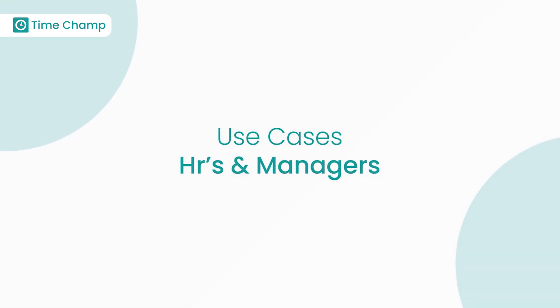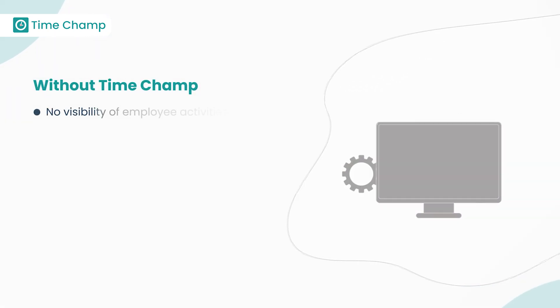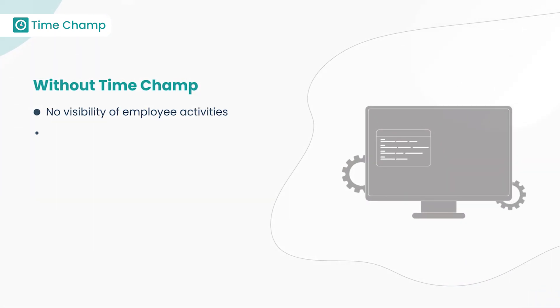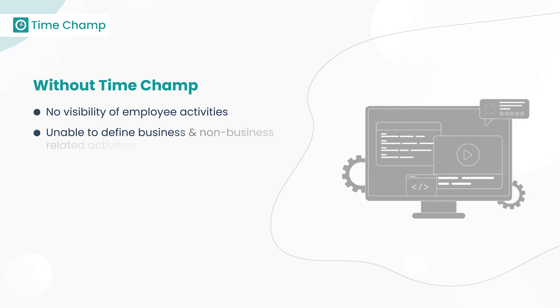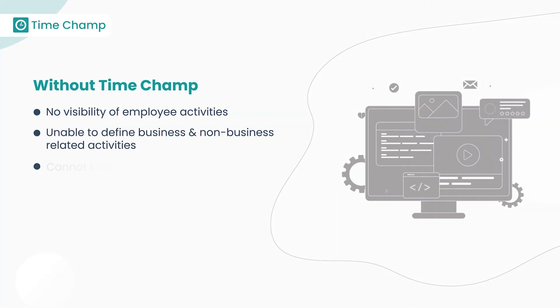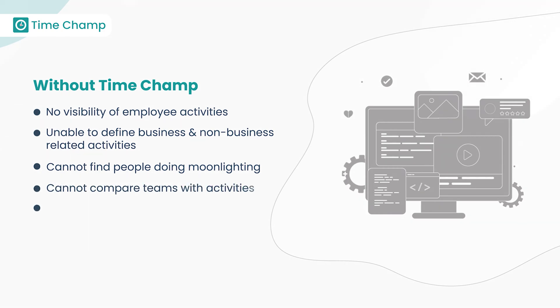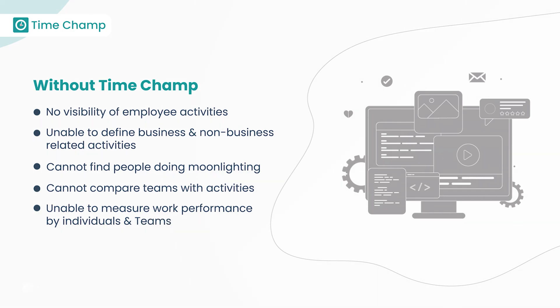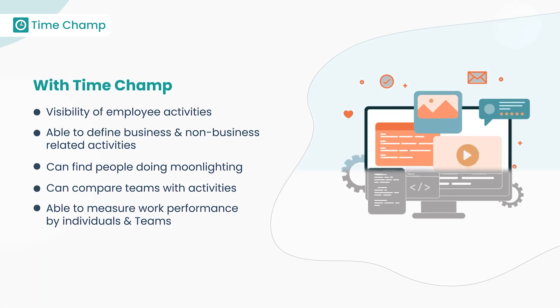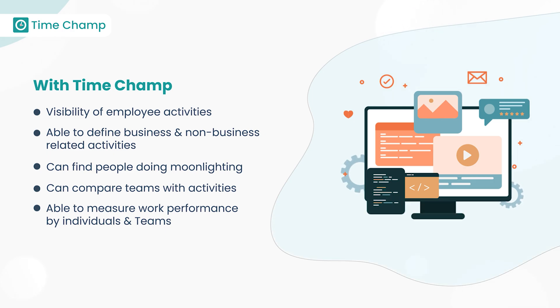Use Cases for HRs and Managers — without Time Champ: no visibility of employee activities, unable to define business and non-business-related activities, cannot find people doing moonlighting, cannot compare teams by activities, and unable to measure work performance by individuals and teams. By using Time Champ, we can overcome all these cases.